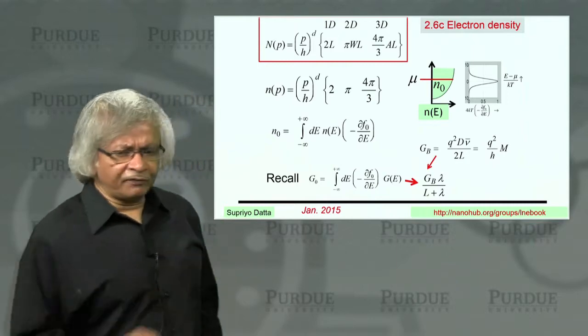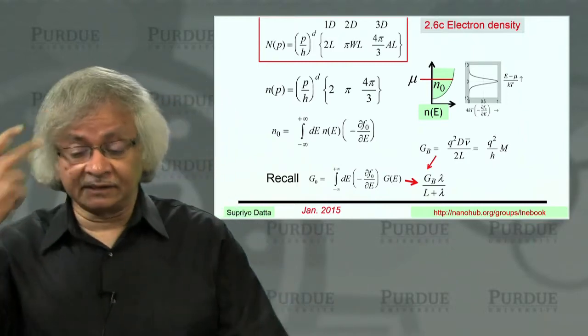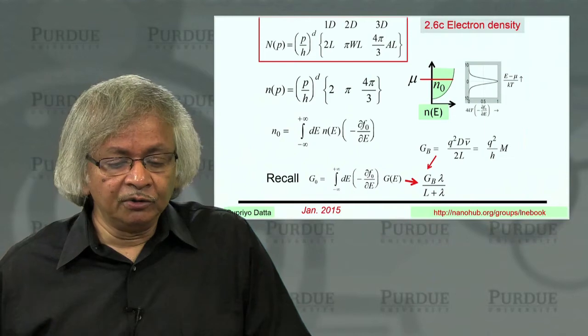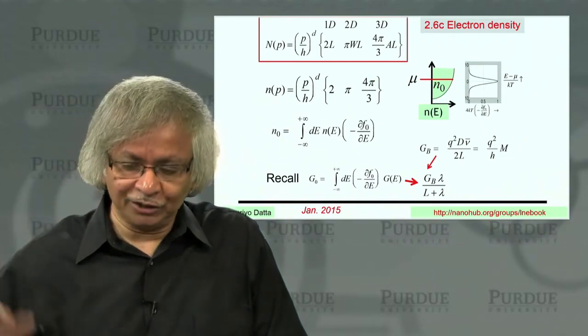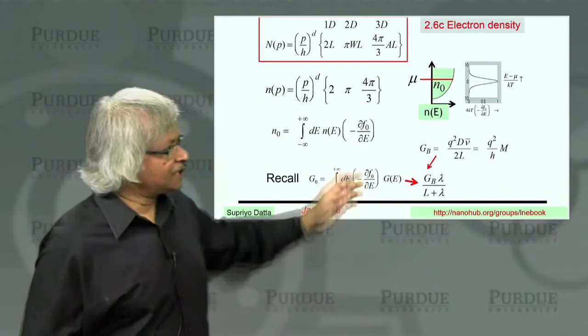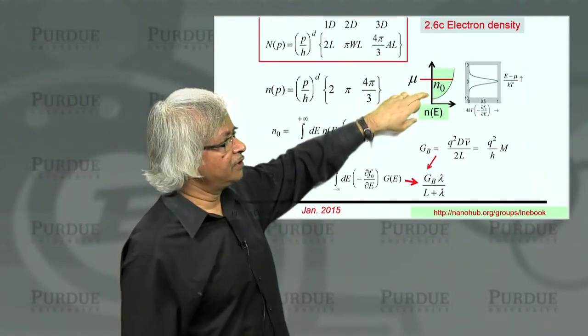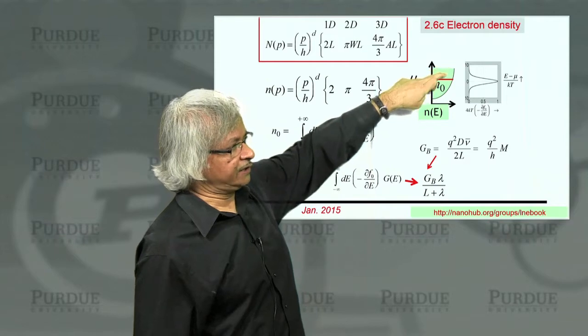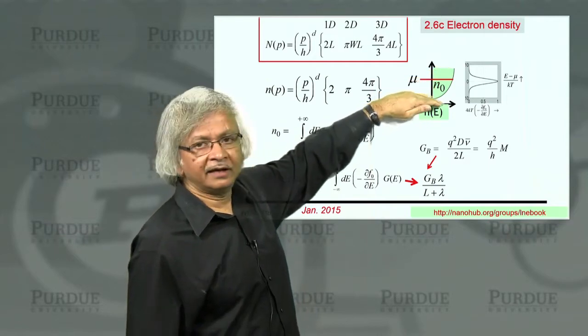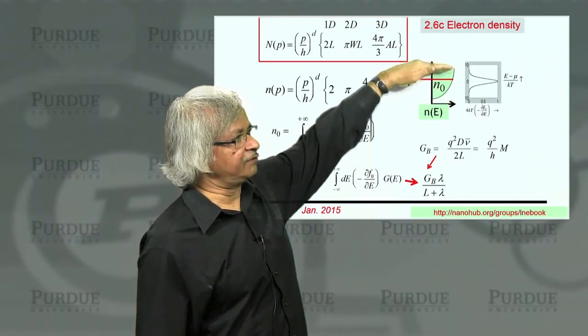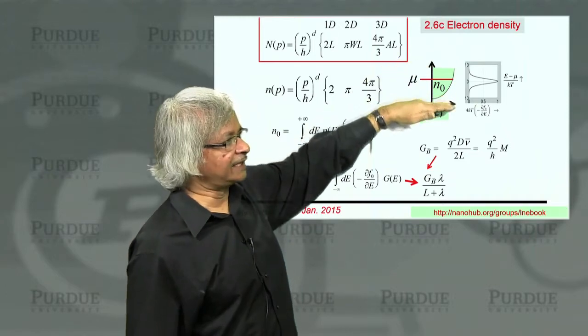Now, before finishing up this section, I'd like to point out one little subtlety with respect to bands that run downwards. This discussion is fairly clear and straightforward, like what we just went through, when the band runs upwards like this. There is a bottom of the band and energies are available above it and there is nothing below.